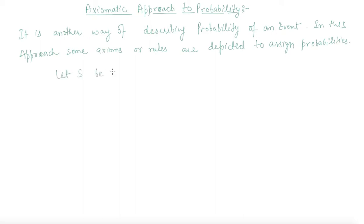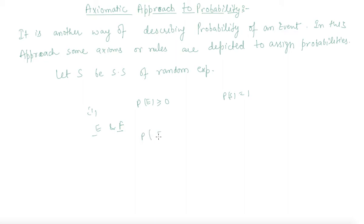Let S be the sample space of some random experiment. The probability P is a real-valued function where the probability of any event is greater than or equal to 0, and the probability of the sample space is 1. If E and F are two mutually exclusive events, then P(E union F) equals P(E) plus P(F), because P(E intersection F) will be 0. The probability always lies between 0 and 1 — the range of probability is the closed interval [0, 1].